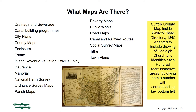Perhaps the biggest and most important group are the Ordnance Survey maps, and I'll be taking a closer look at these. There are also parish maps, poverty maps such as Booth's poverty maps, maps of public works, road maps, canal and railway routes, other social survey maps, tithe maps, and town plans. That's just to give you an idea of the wide range of maps that exist from at least the 1500s onwards for the UK. I'm primarily focusing on England and Wales, but many of these maps also exist for Scotland too.